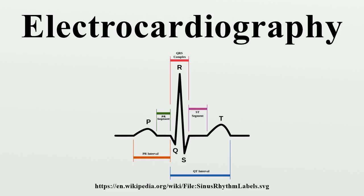Lead augmented vector left has the positive electrode on the left arm, with the negative pole being a combination of the right arm electrode and the left leg electrode. Lead augmented vector foot has the positive electrode on the left leg, with the negative pole being a combination of the right arm electrode and the left arm electrode. Together with leads I, II, and III, augmented limb leads AVR, AVL, and AVF form the basis of the hexaxial reference system, which is used to calculate the heart's electrical axis in the frontal plane.